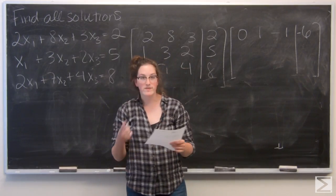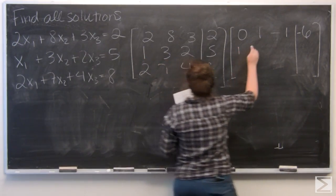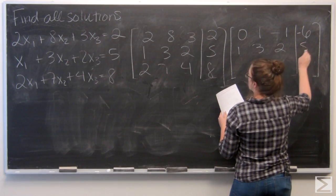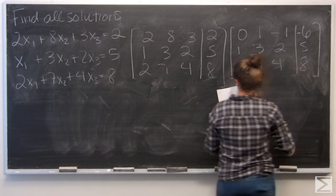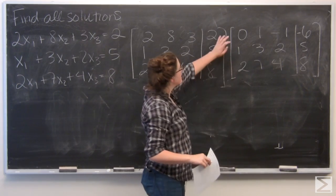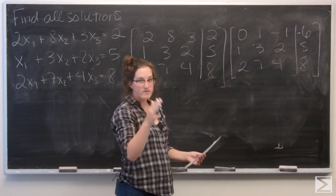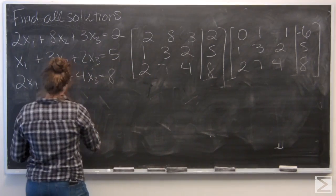And from there, I am just going to go ahead and fill in the rest of the rows. And now I am going to go ahead and switch the top two rows so I can have my leading 1 in the first column on the top row.